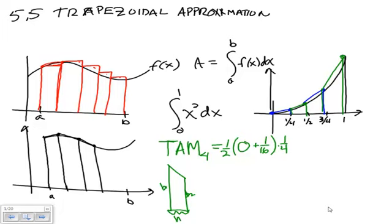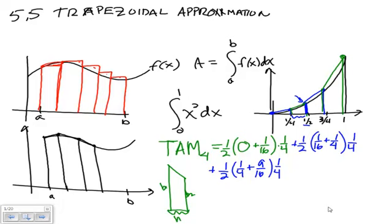So zero plus one sixteenth multiplied by one quarter. I'm going to call that a representation of the first trapezoid. The next trapezoid has area one half times one sixteenth plus one quarter times one quarter. And this is the x squared term. And then what's the width of the interval? One fourth. Plus one half times one quarter plus nine sixteenths times one fourth. Plus one half times nine sixteenths plus one times one fourth.